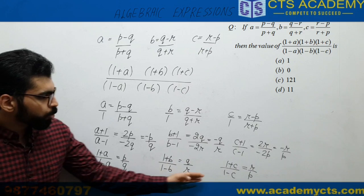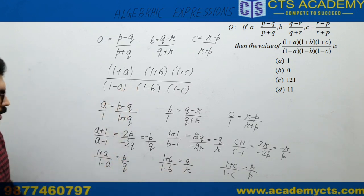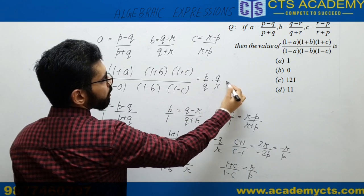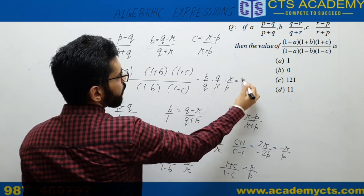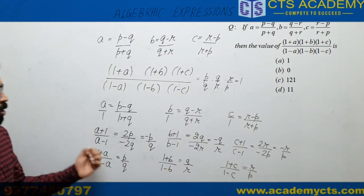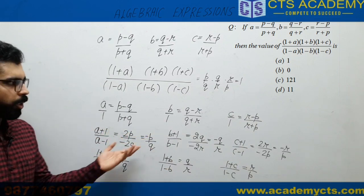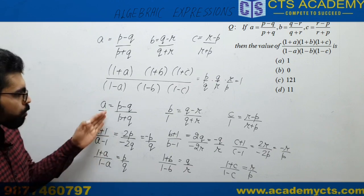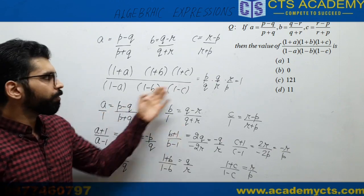If you put the values of these three expressions, we get (-P/Q) × (-Q/R) × (-R/P). That will come out to be -1. If you use the method of componendo and dividendo, we can solve the question, but it's also quite a lengthy method. We have to solve componendo and dividendo, then we will get the answer.